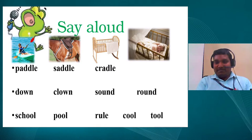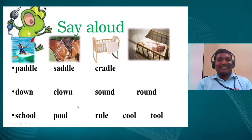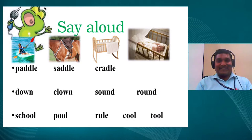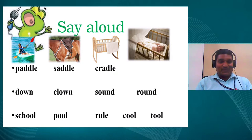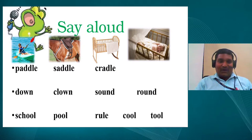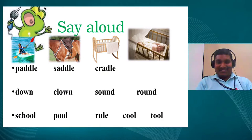Now see these simple words — repeat after me: down, clown, sound, round. You can see how to pronounce the words — this is called phonemic awareness. Down, clown, sound, round. Very good!